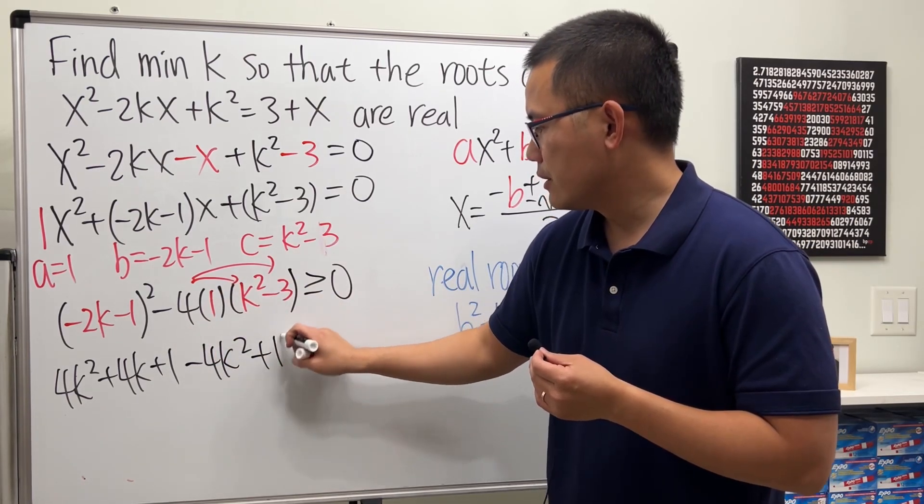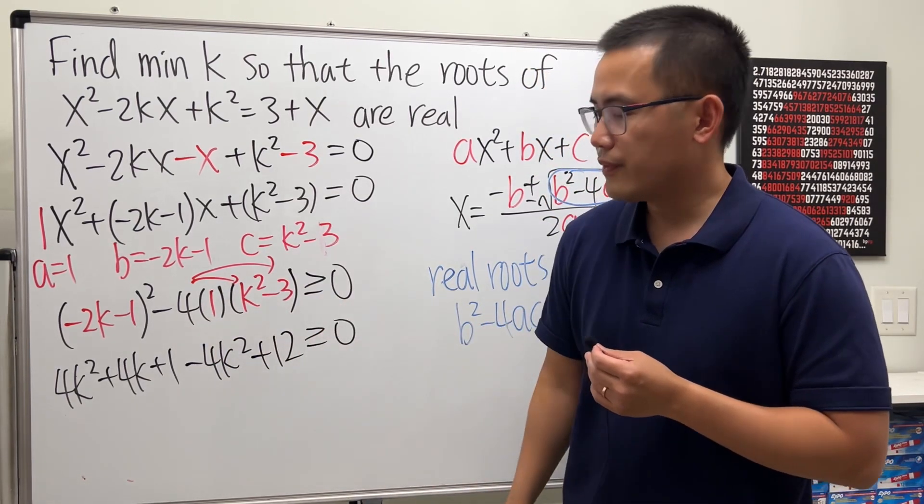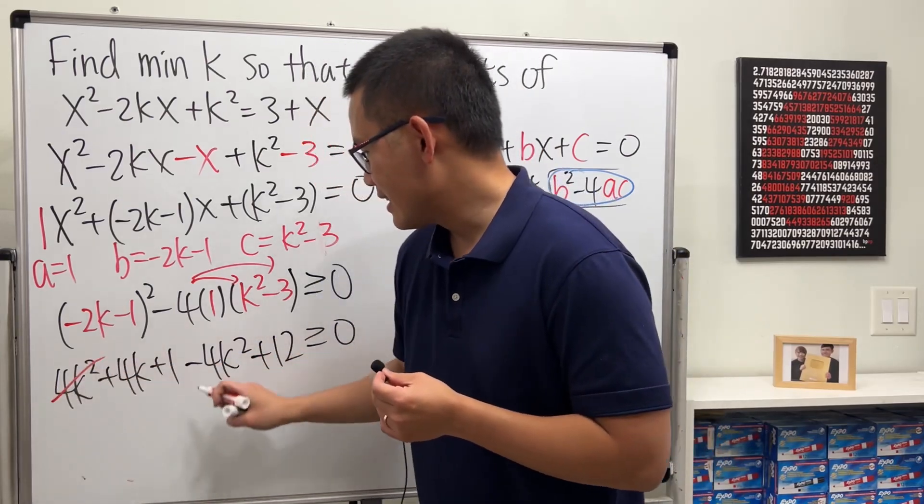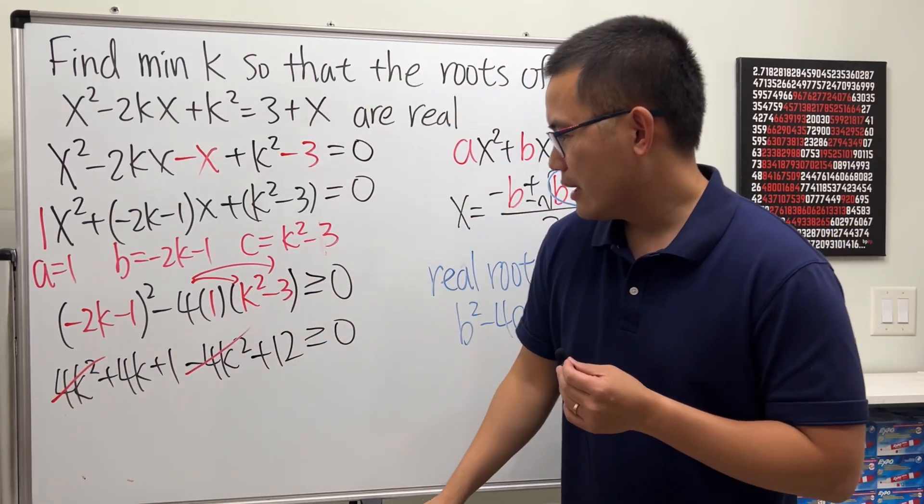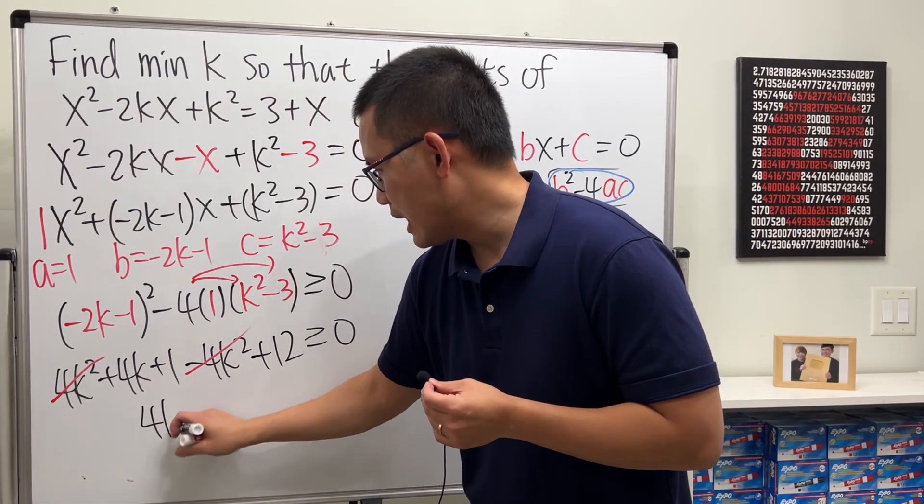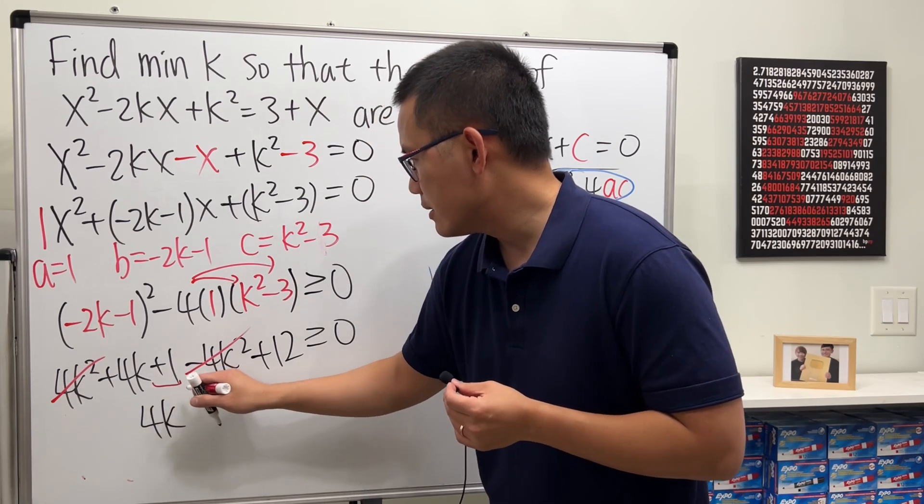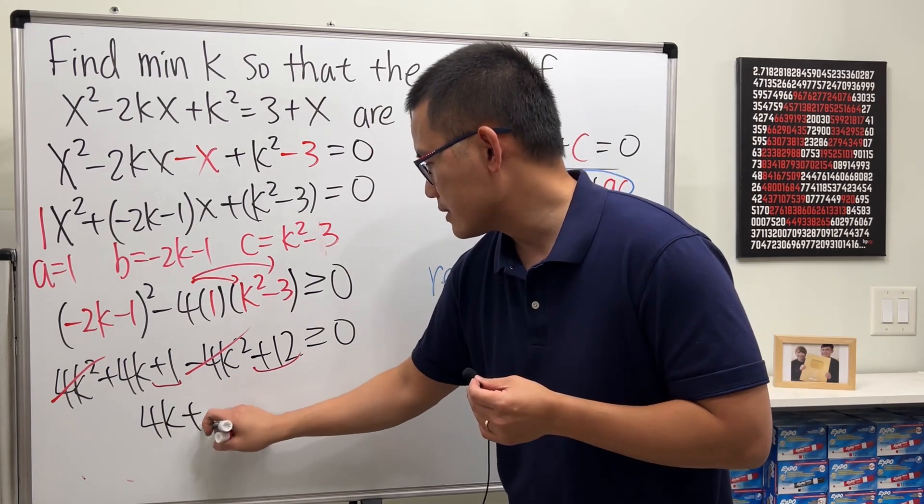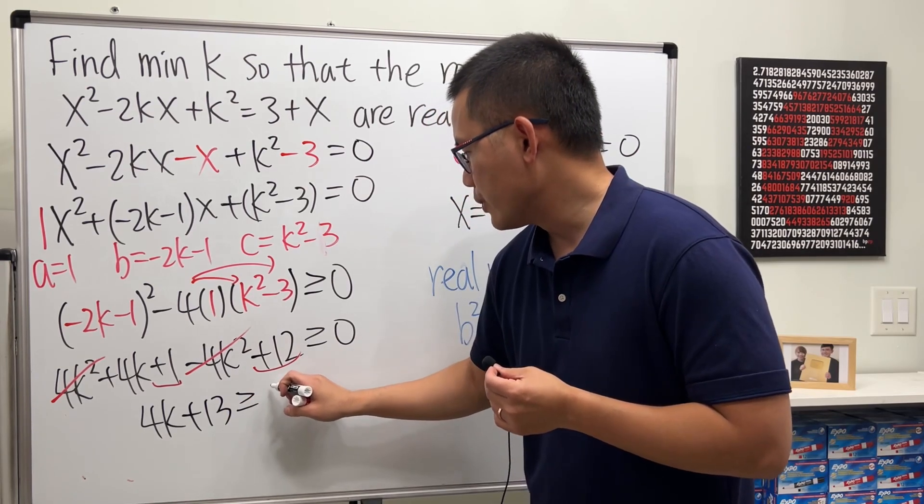Hey look, this and that cancel. So we are looking at 4k plus 13. This is 13, so plus 13 is greater than or equal to zero.